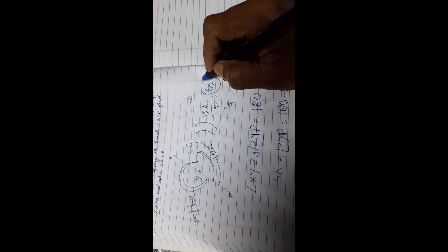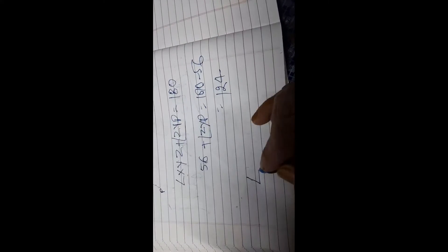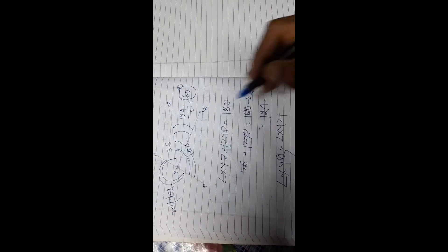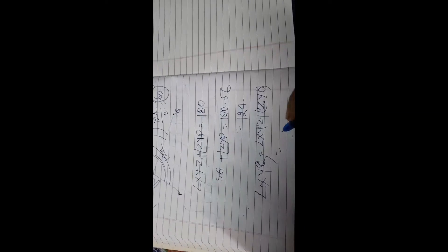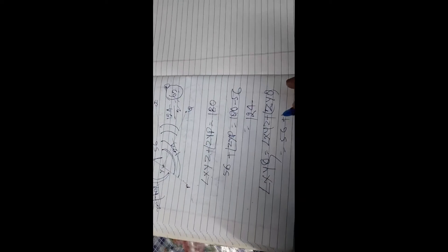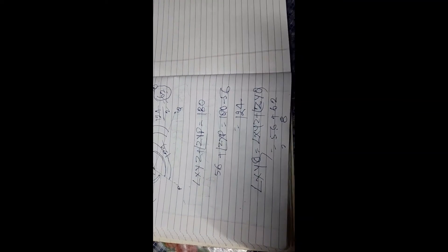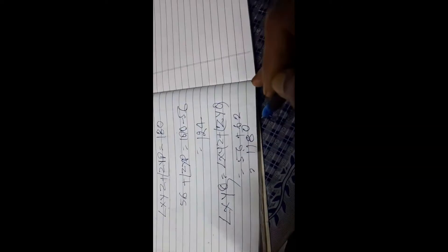Angle XYQ is equal to angle XYZ plus angle ZYQ. XYZ is given as 56 and this is 62, so 56 plus 62 equals 118. The value of XYQ is equal to 118 degrees.